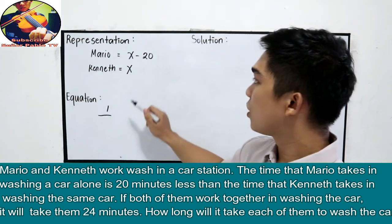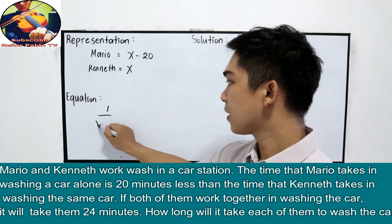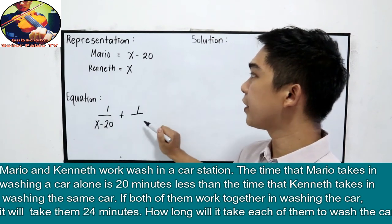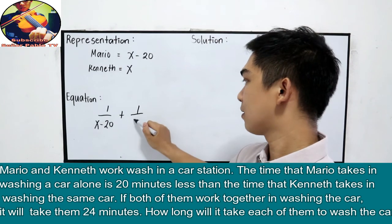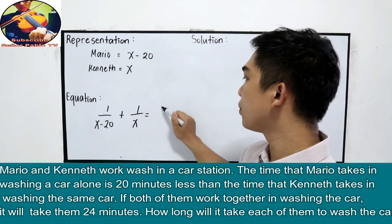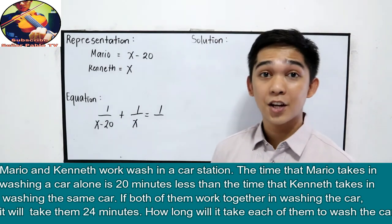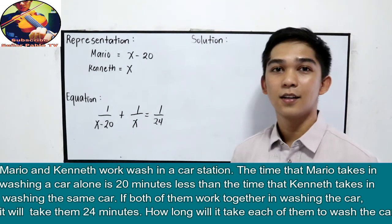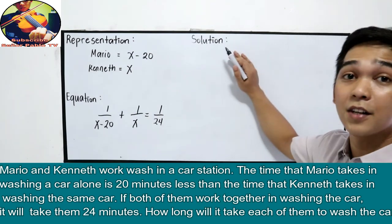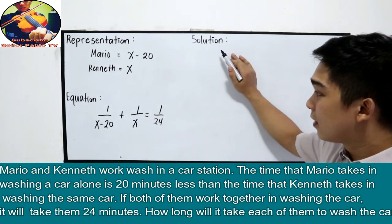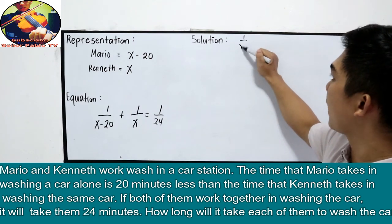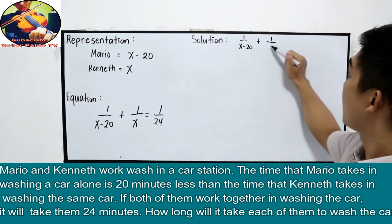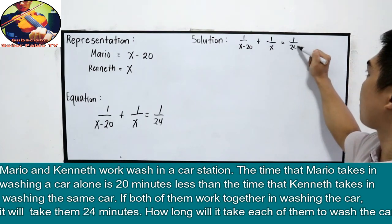So sa equation natin, 1 over yung time ni Mario, x minus 20, plus 1 over yung time ni Kenneth, x, is equal to 1 over yung time nila altogether. That is 24. Then, solve it natin. 1 over x minus 20 plus 1 over x is equal to 1 over 24.